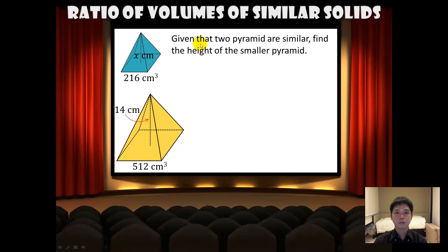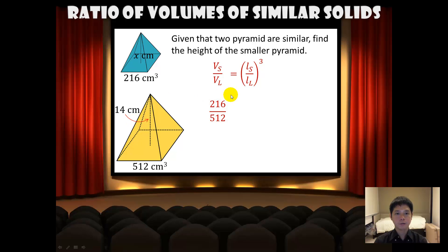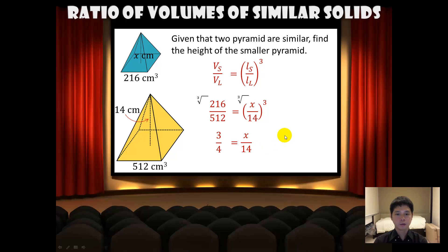Given that these two pyramids are similar, find the height of the smaller pyramid. We use the formula Vs over VL equals the cube of Ls over L. Substituting the values, we have 216 over 5.12 for the volume equals the cube of x over 14. To find x, we cube root both sides, giving 3 over 4 equals x over 14. Multiplying both sides by 14, we get x equals 10.5 cm.